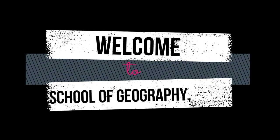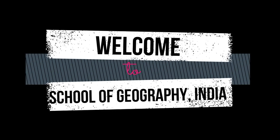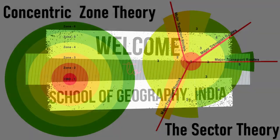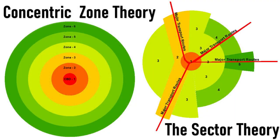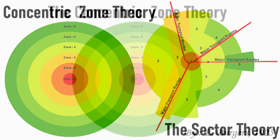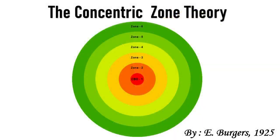Welcome to our channel School of Geography India. In this video, we are going to discuss two theories on hierarchy of central functions and places. The first is the Concentric Zone Theory. This theory was given by E. Burgess in the year 1925. He discussed about the development of a city outwards from a center in concentric zones.